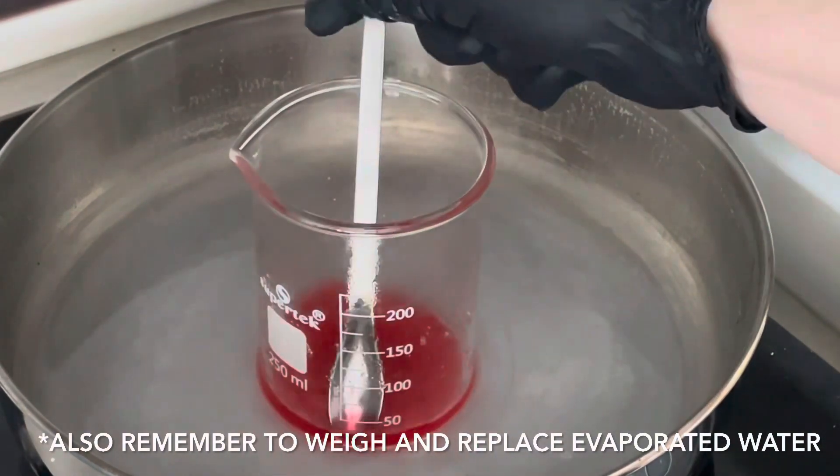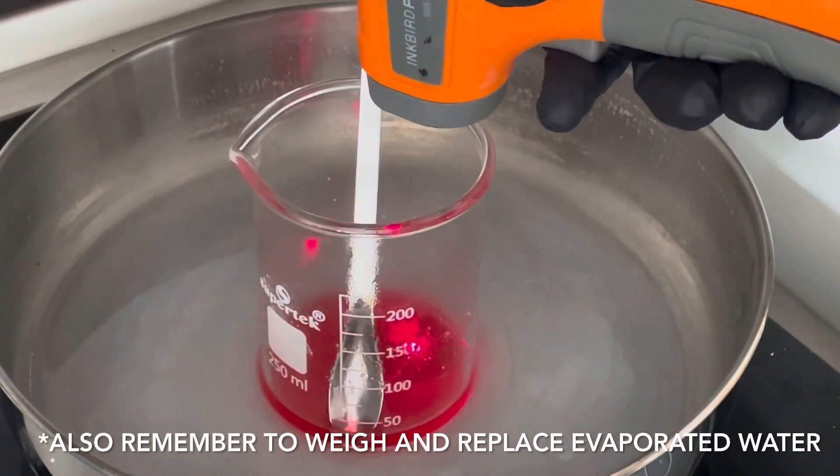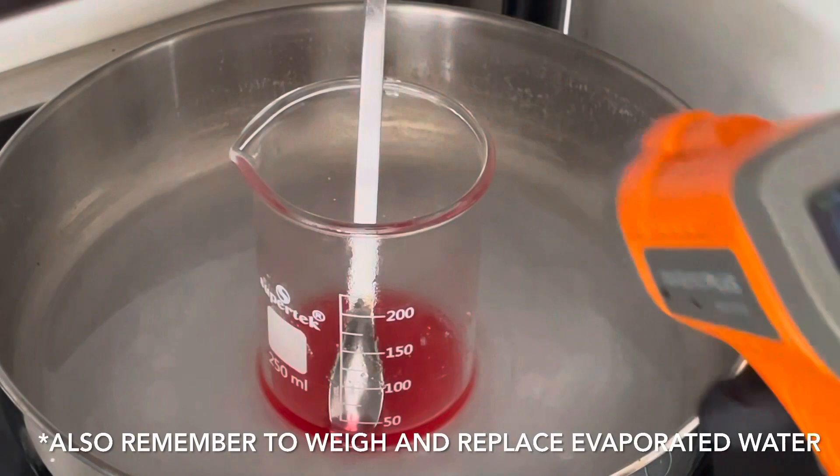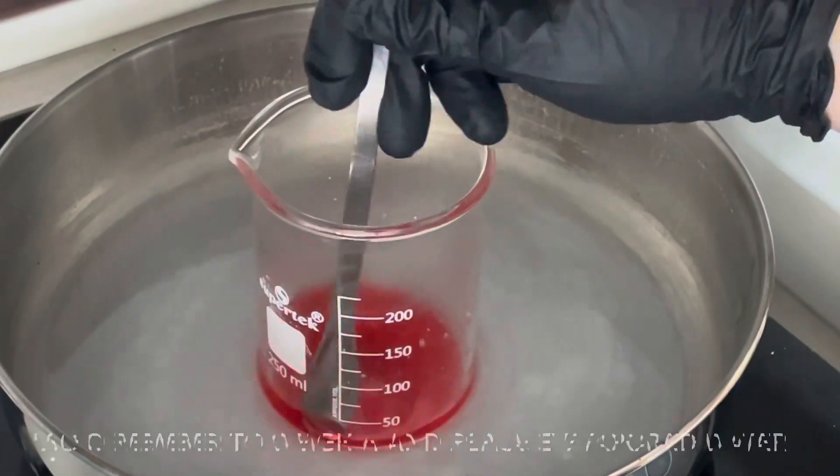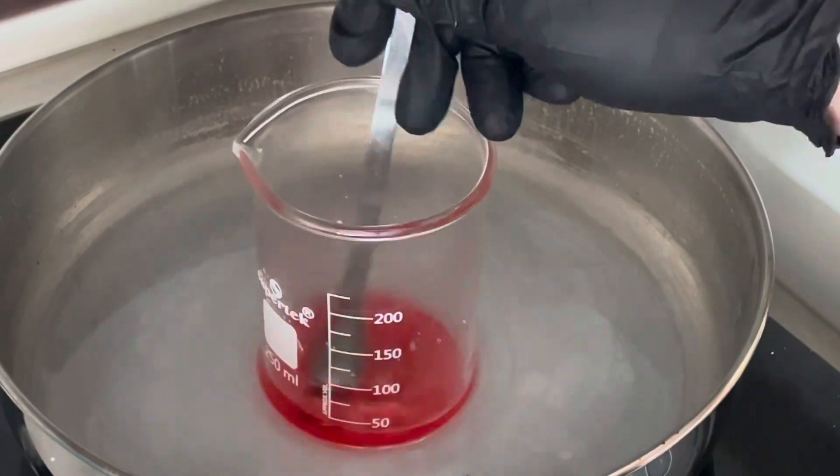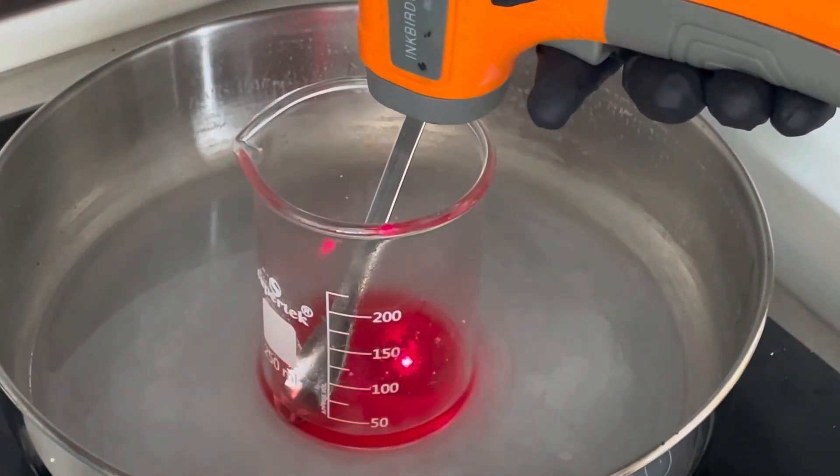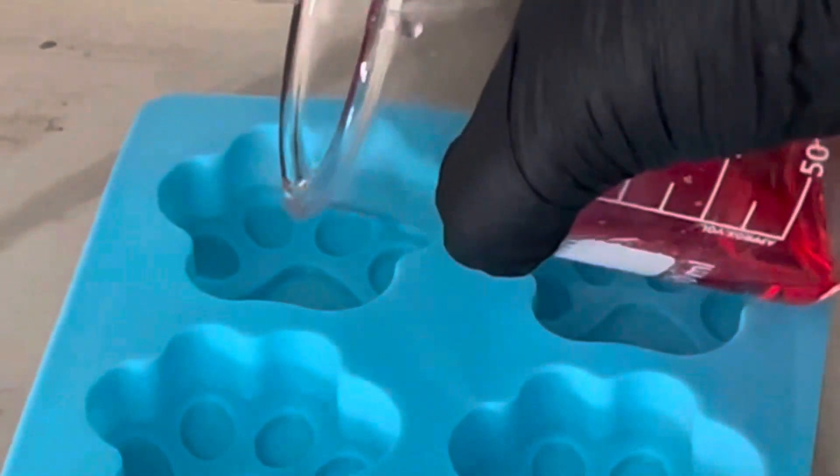Keep stirring it, stir it all in and then we're going to let this come down to about 60 and then we're going to pour it into our mold. And that's our first deodorant poured.